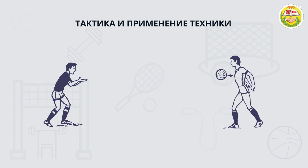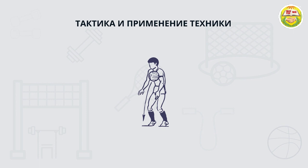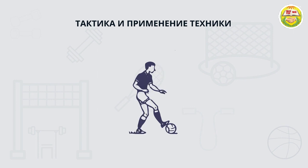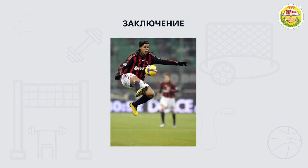Еще одна ситуация, в которой практикуется остановка мяча грудью: прием происходит после передачи от партнера с очень дальней дистанции — расстояние 10-20 метров, после чего игрок продолжает вести мяч или делает передачу. Сегодня мы познакомились с техникой остановки мяча грудью и ошибками, которые могут возникать при ее исполнении, и изучили ситуации, в которых необходимо использовать именно этот прием.